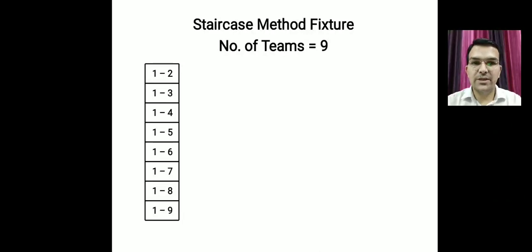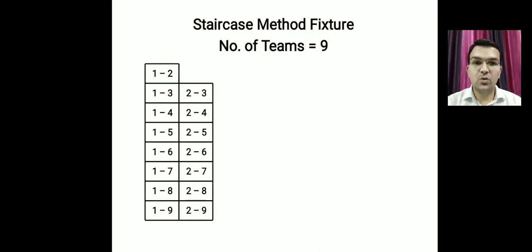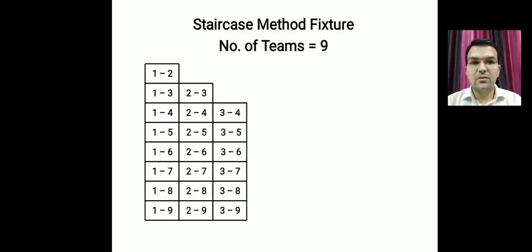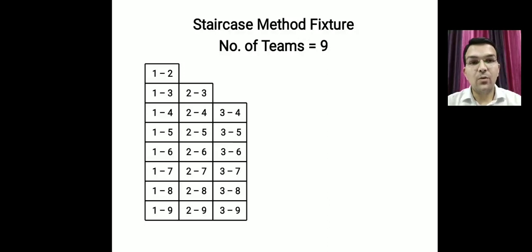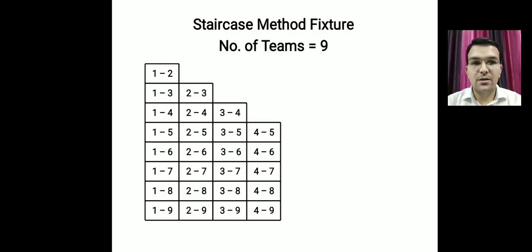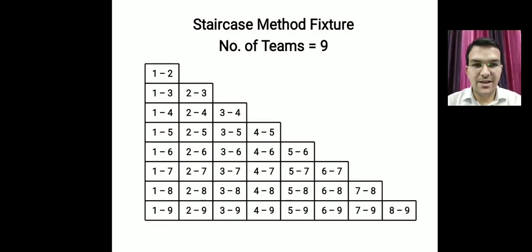After the first round, we make the second round in which team number two plays with all remaining opponents. Since team two already played team one, we start with team two versus three. In the third round, team three starts with team four, as team three already played teams two and one. In the same manner, we make all the remaining rounds.